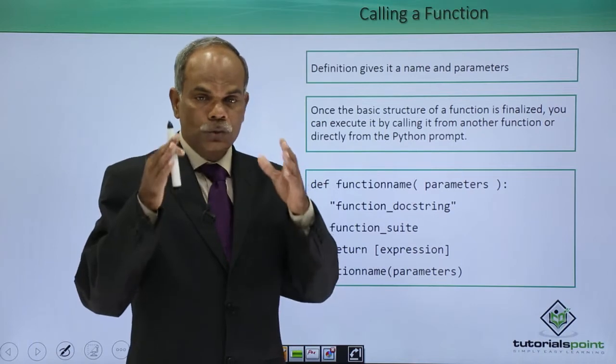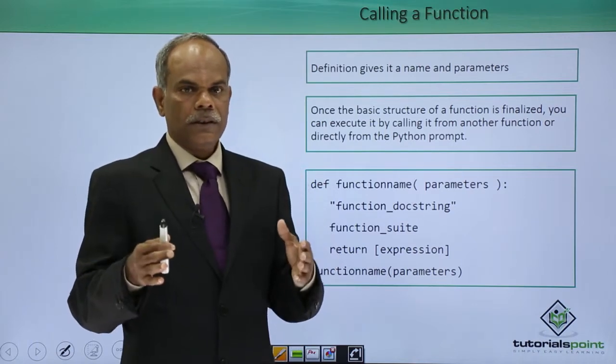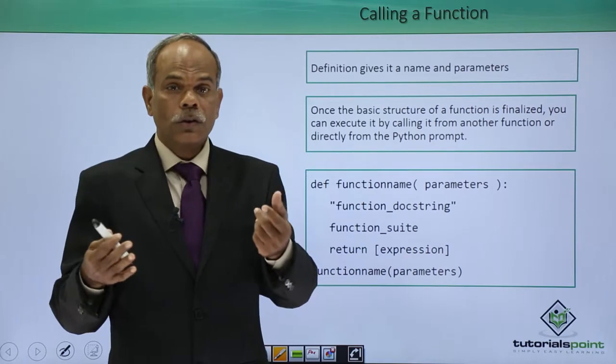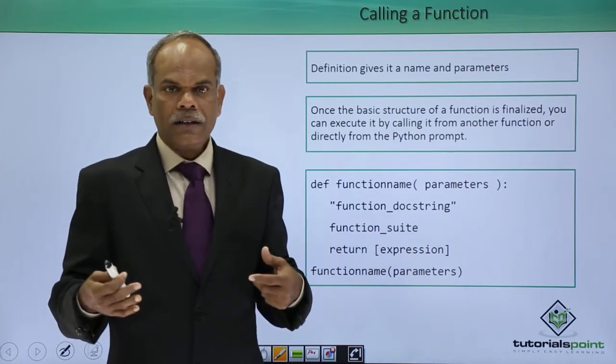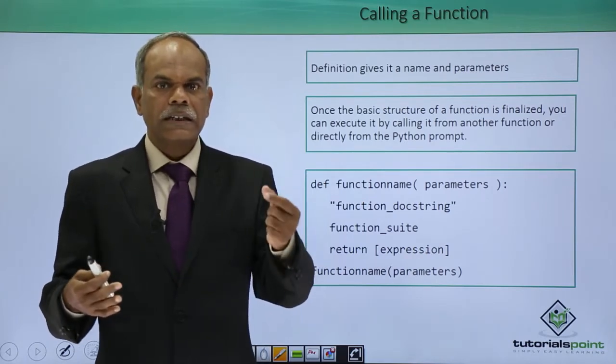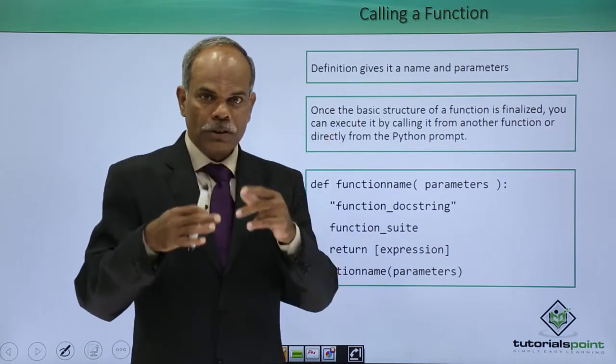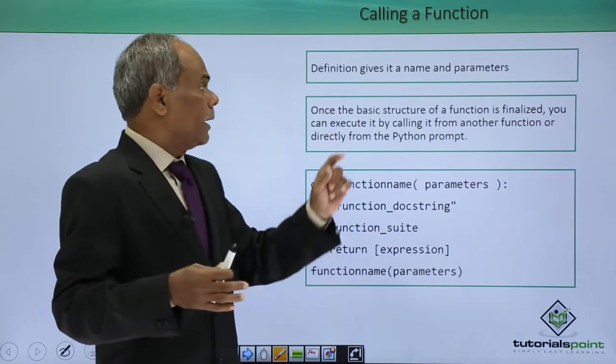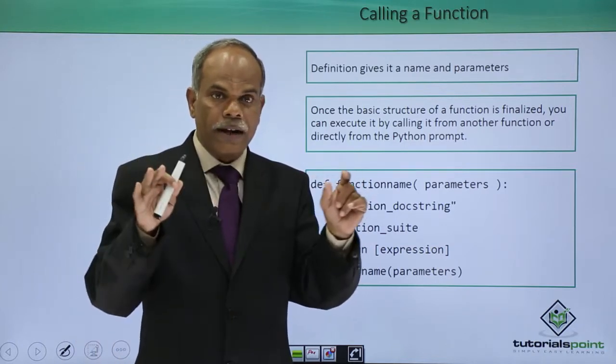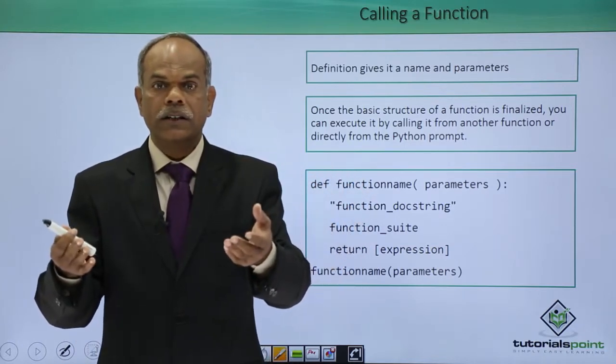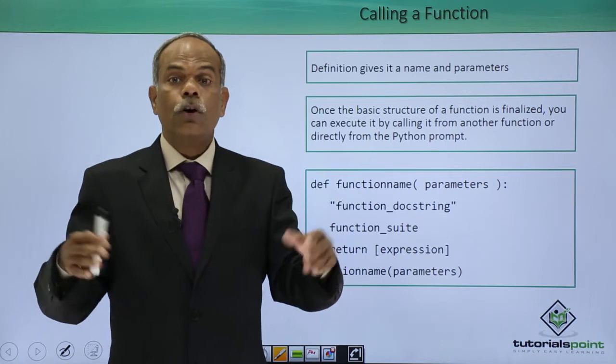By using the def keyword, the defined function gets an identifier. The def keyword gives an identifier to that function, and you identify which parameters will be provided to it—these are called the formal arguments.